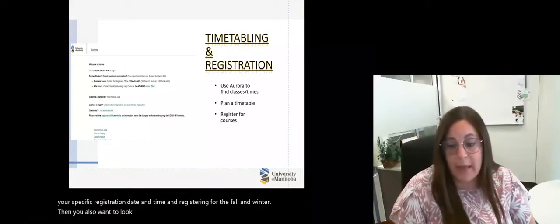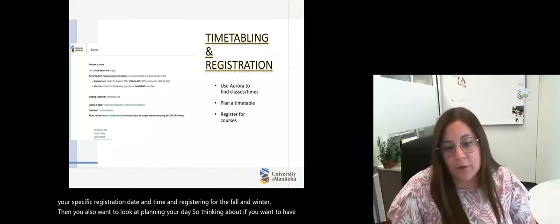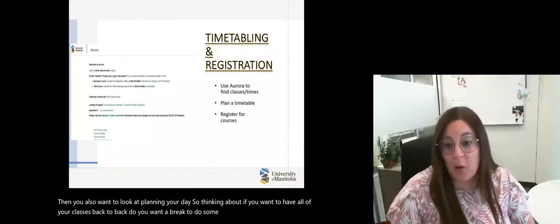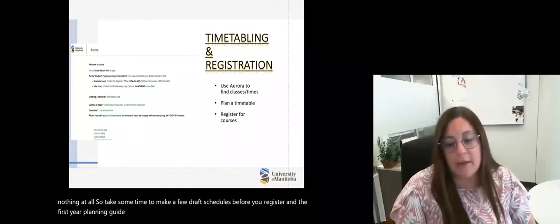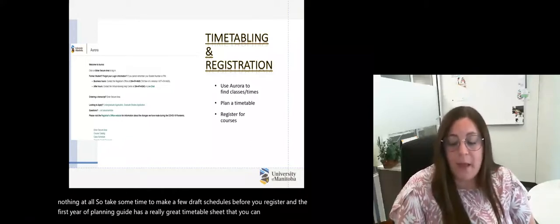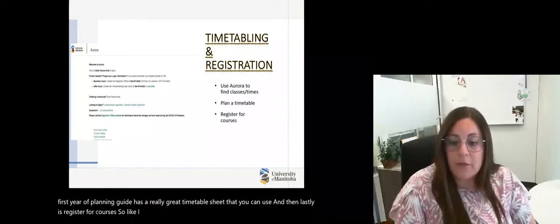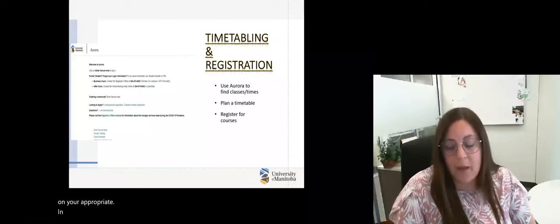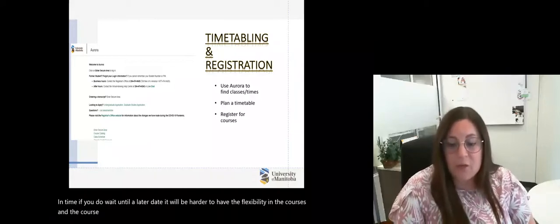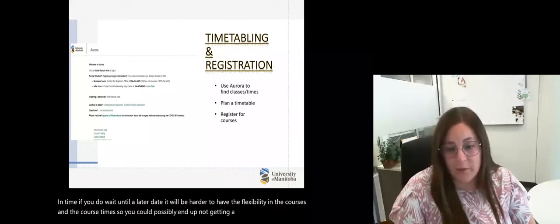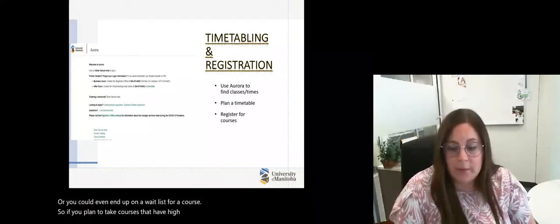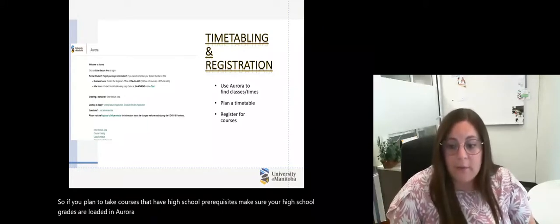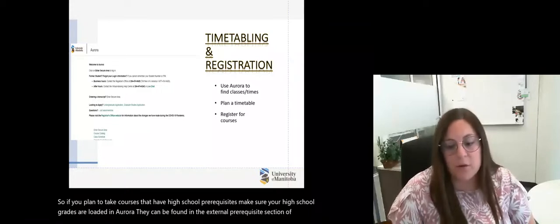Then you also want to look at planning your day. So thinking about if you want to have all of your classes back to back, do you want a break to do some studying or just a break to do nothing at all. Take some time and make a few draft schedules before you register. And the first year planning guide has a really great timetable sheet that you can use. And then lastly is register for courses. Make sure you're registering for the fall and winter on your appropriate date and time. If you do wait until a later date, it will be harder to have the flexibility in the courses and the course times. So if you plan to take courses that have high school prerequisites, make sure your high school grades are loaded in Aurora.